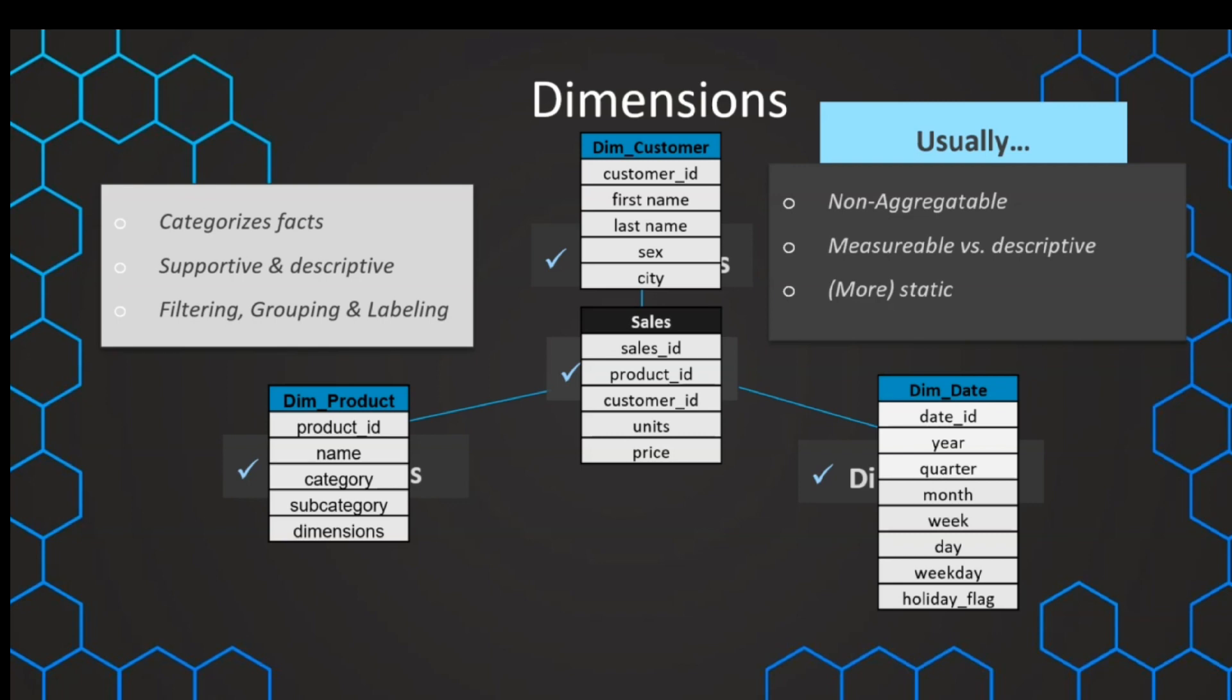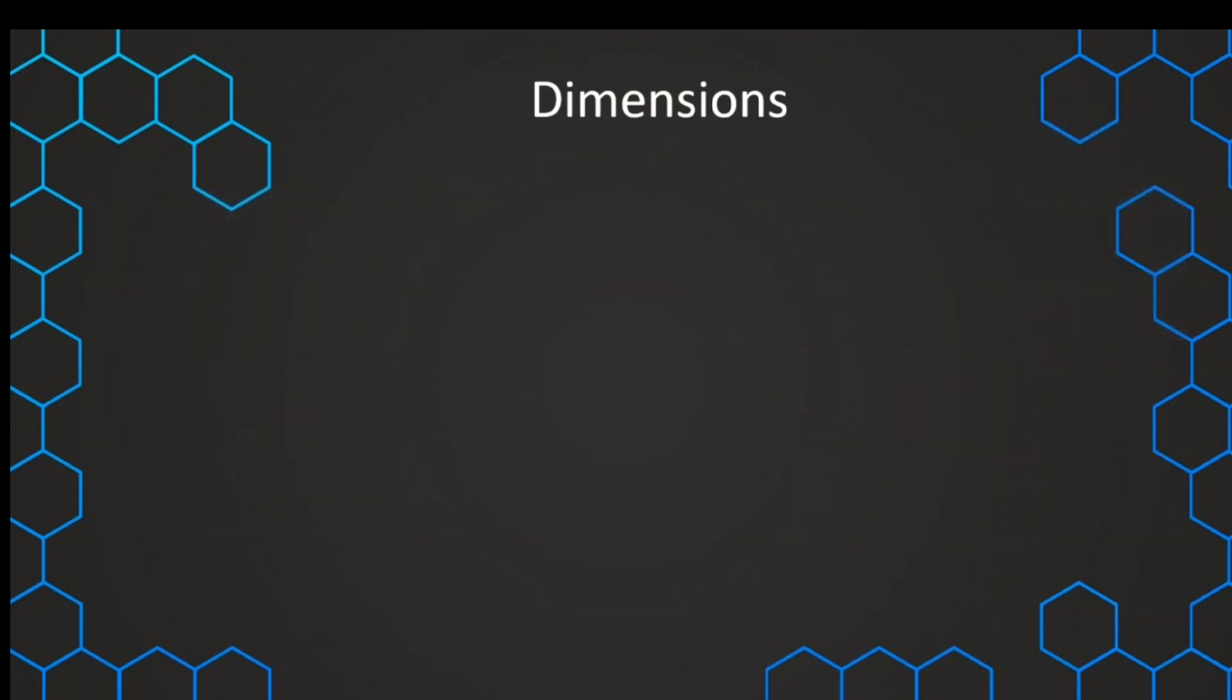we have dimensions that are more static. For example, product name or product category is something that is usually not changing or there's nothing happening. Of course, we can have changes in dimensions too, but in general, this data is more static.